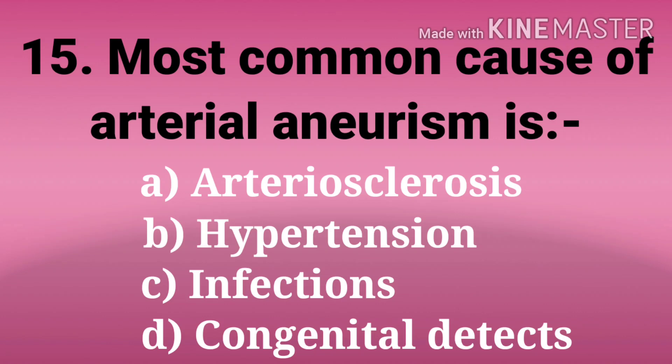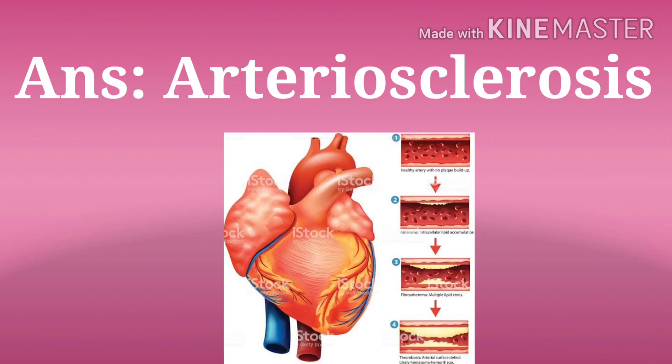The 15th question: most common cause of arterial aneurysm is. The options are arteriosclerosis, hypertension, infections, congenital defects. The answer is arteriosclerosis.